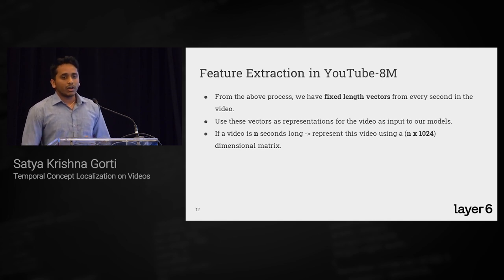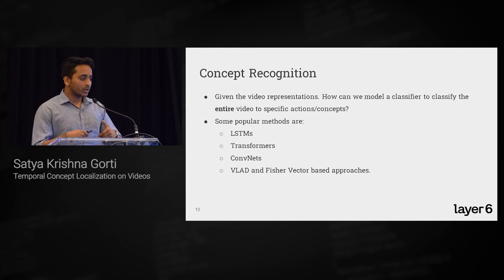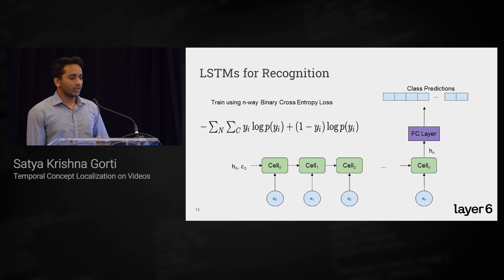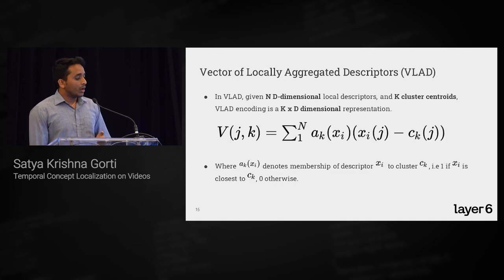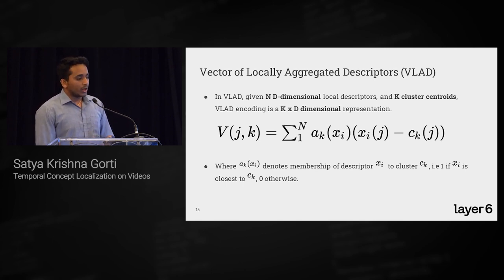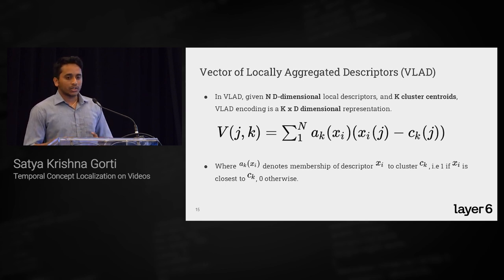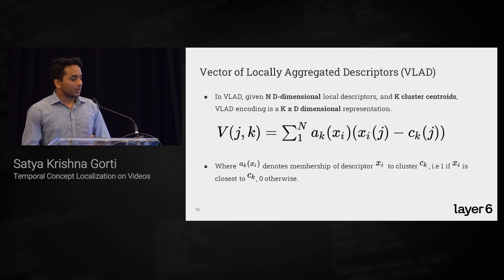For concept recognition — classifying the entire video into classes — popular methods include LSTMs, Transformers, ConvNets, and Vlad and Fischer vector-based approaches. LSTMs and Transformers form a natural choice for modeling temporal relations. In the LSTM approach, we input the fixed-length representations, unroll the LSTM, get the final hidden layer, and classify using an N-way binary cross-entropy loss, since we want multi-class labels.